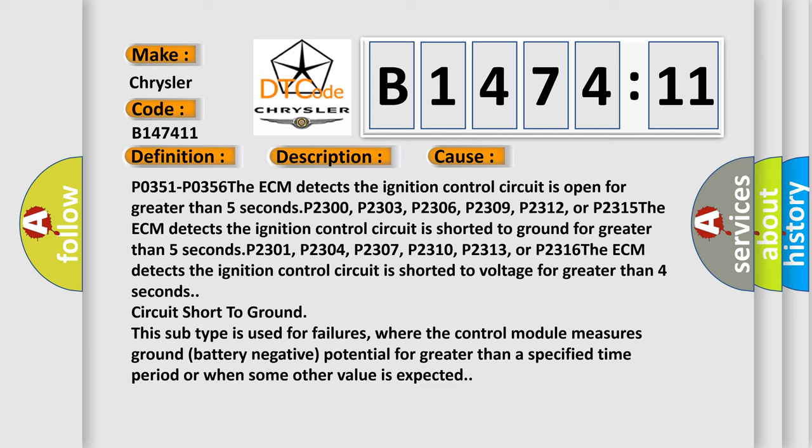This diagnostic error occurs most often in these cases. P0351-P0356: The ECM detects the ignition control circuit is open for greater than 5 seconds. P2300, P2303, P2306, P2309, P2312, or P2315: The ECM detects the ignition control circuit is shorted to ground for greater than 5 seconds.